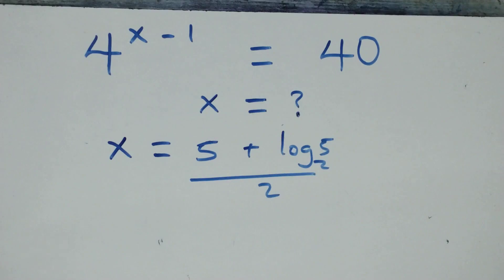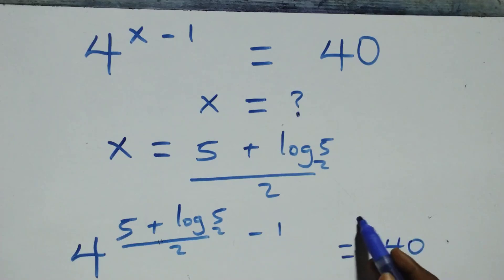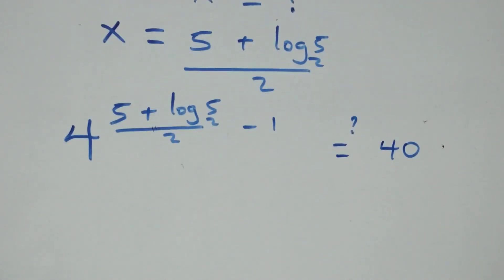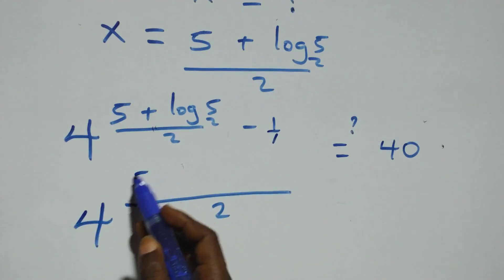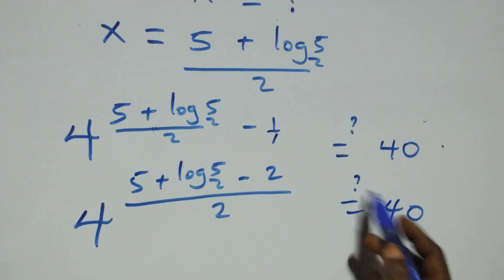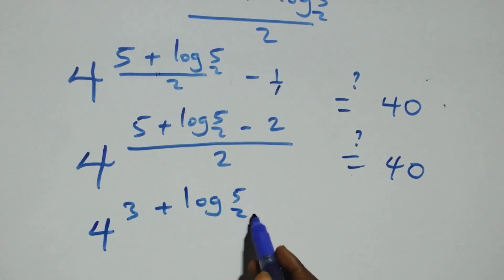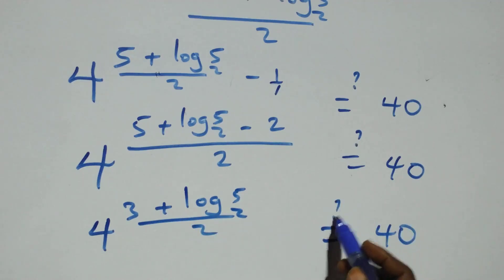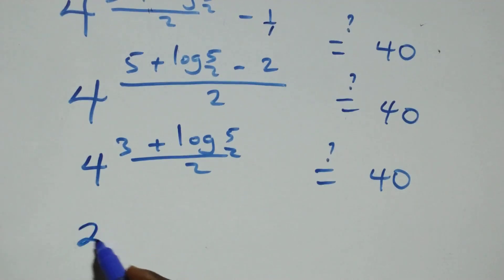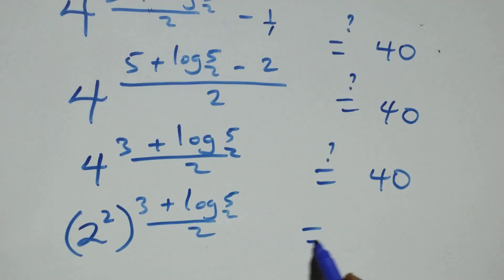What we have here becomes 4 raised to power (5 plus log_2(5)) all over 2, minus 1, equals to 40. We bring these fractions together — we have 4 raised to power (3 plus log_2(5)) all over 2, equals to 40, since 5 minus 2 is 3. Then, 4 can be written as 2 squared, raised to power (3 plus log_2(5)) all over 2, equals to 40.